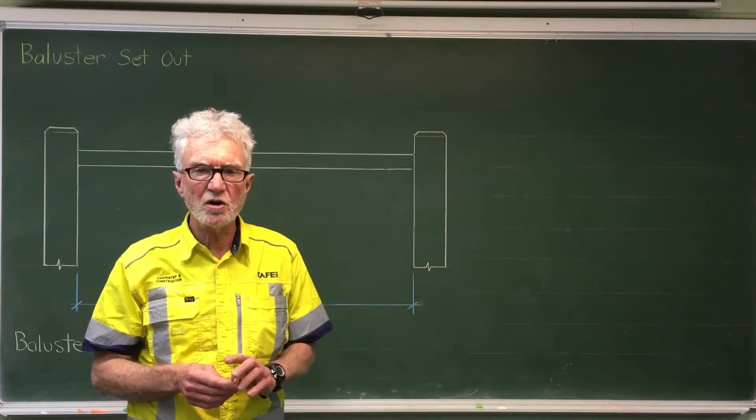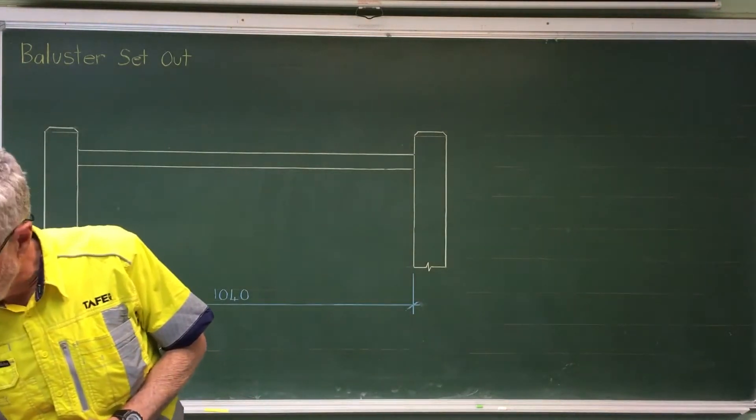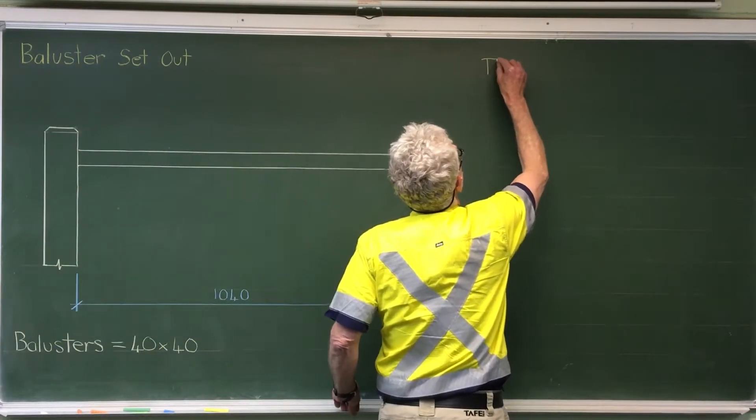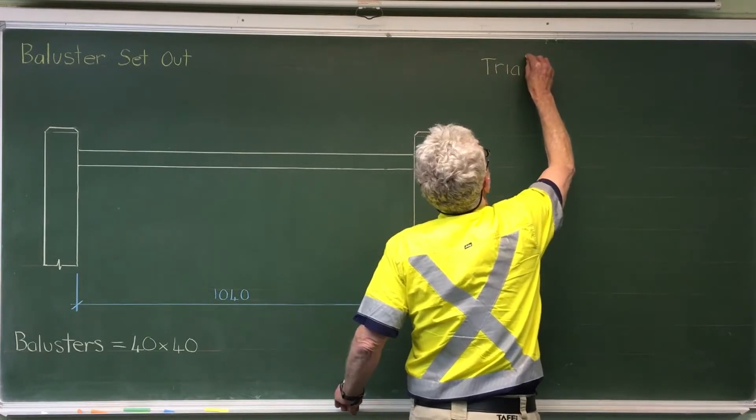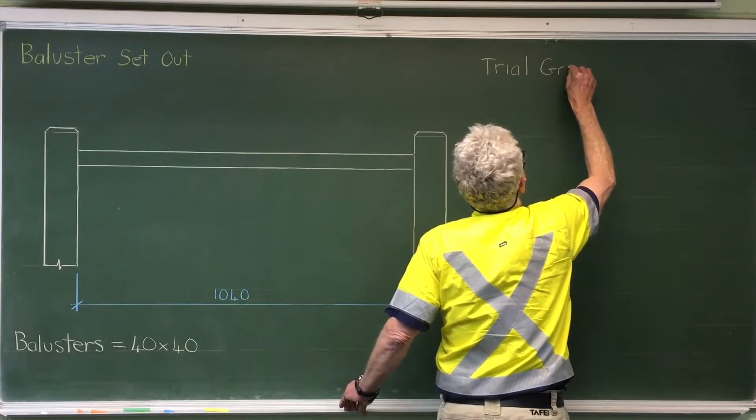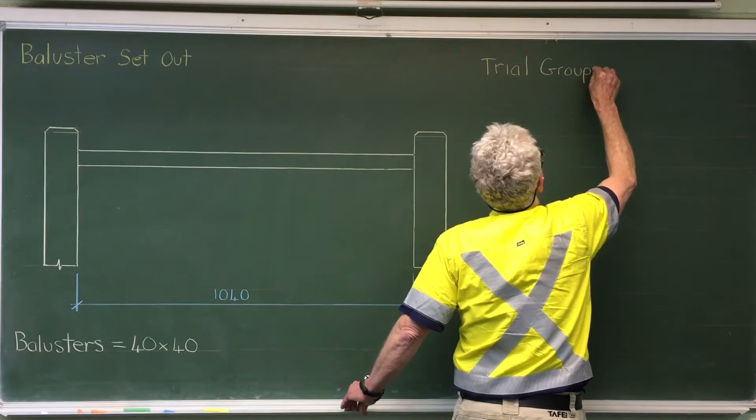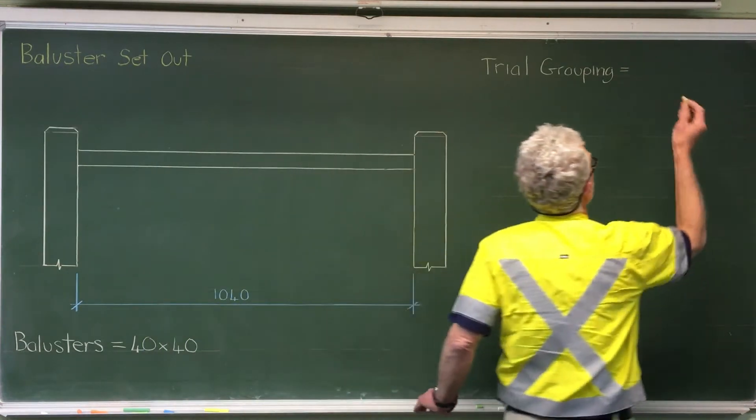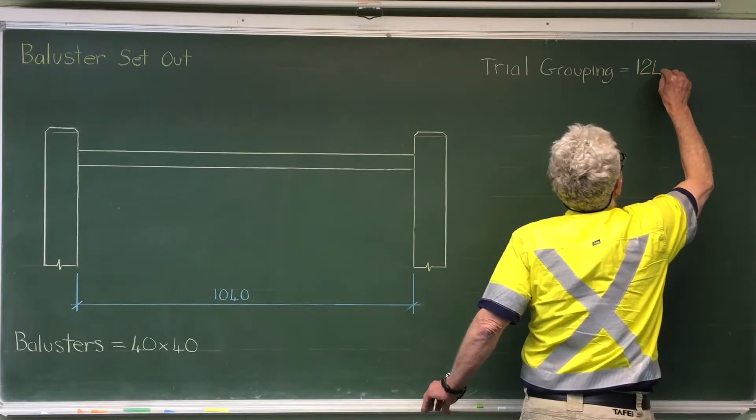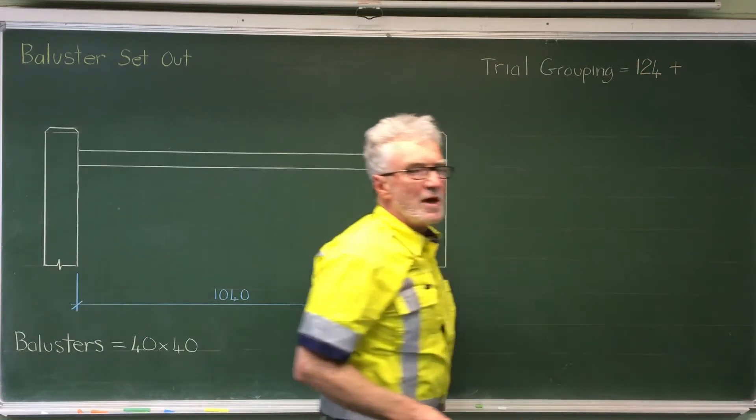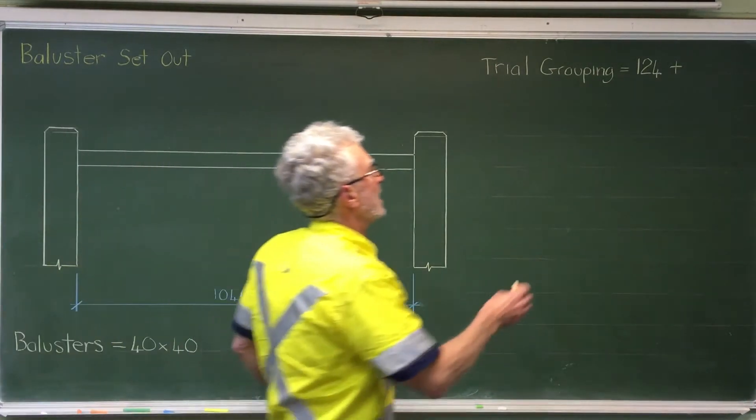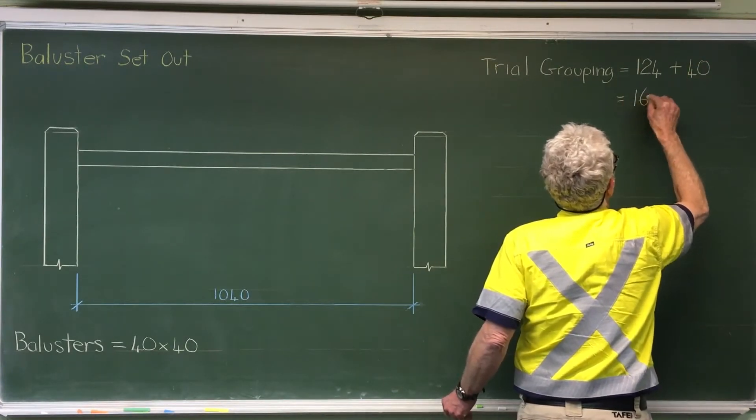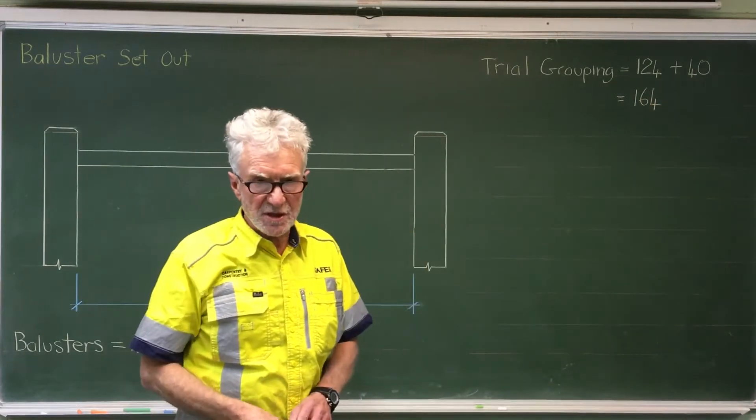To make sure we have less than 125 millimetres we're going to use 124 millimetres in our calculations and the first thing we work out is the trial spacing or trial grouping. So to get the trial grouping we have the maximum gap from the Building Code of Australia, 124 millimetres, and we're going to add the 40 millimetres thickness for our baluster. That gives us 164 millimetres as our trial.